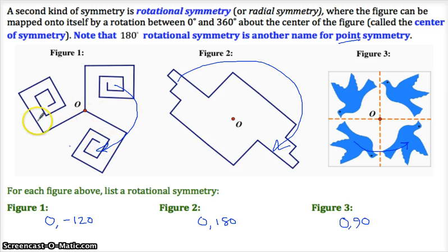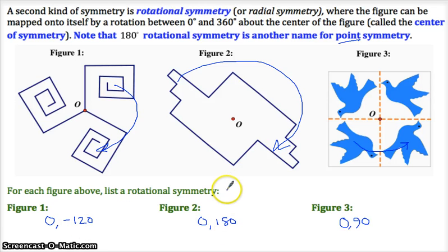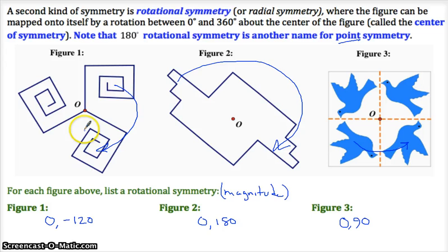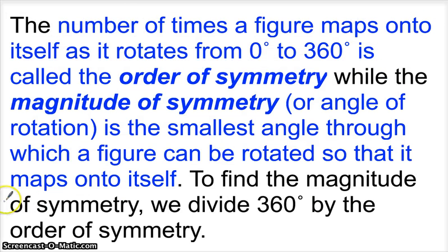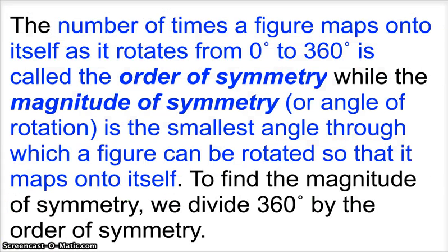The number of times a figure maps onto itself as it rotates from 0 to 360 is called the order of symmetry. Order of symmetry is the number of clicks before it gets back to where it started. So this thing has three positions it could rest in. It's like if this were a fan, it would have three blades. This would have order three rotational symmetry. This has order two. This has order four. While the magnitude of symmetry is what we've done here - the magnitude is the smallest angle through which a figure can be rotated.